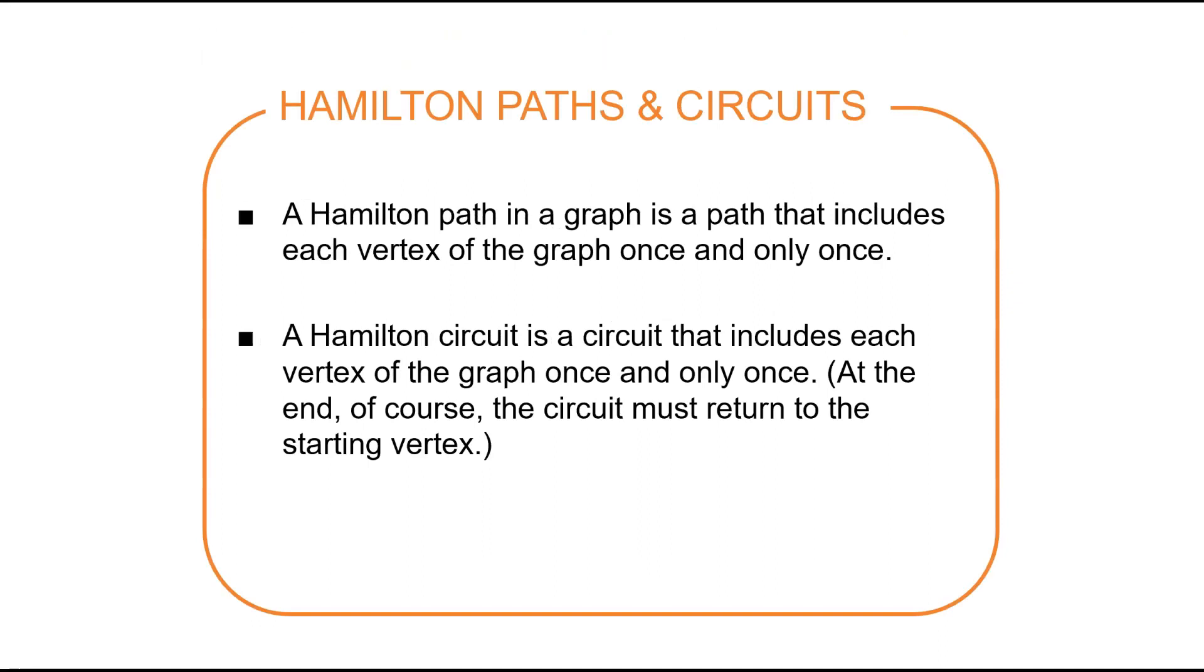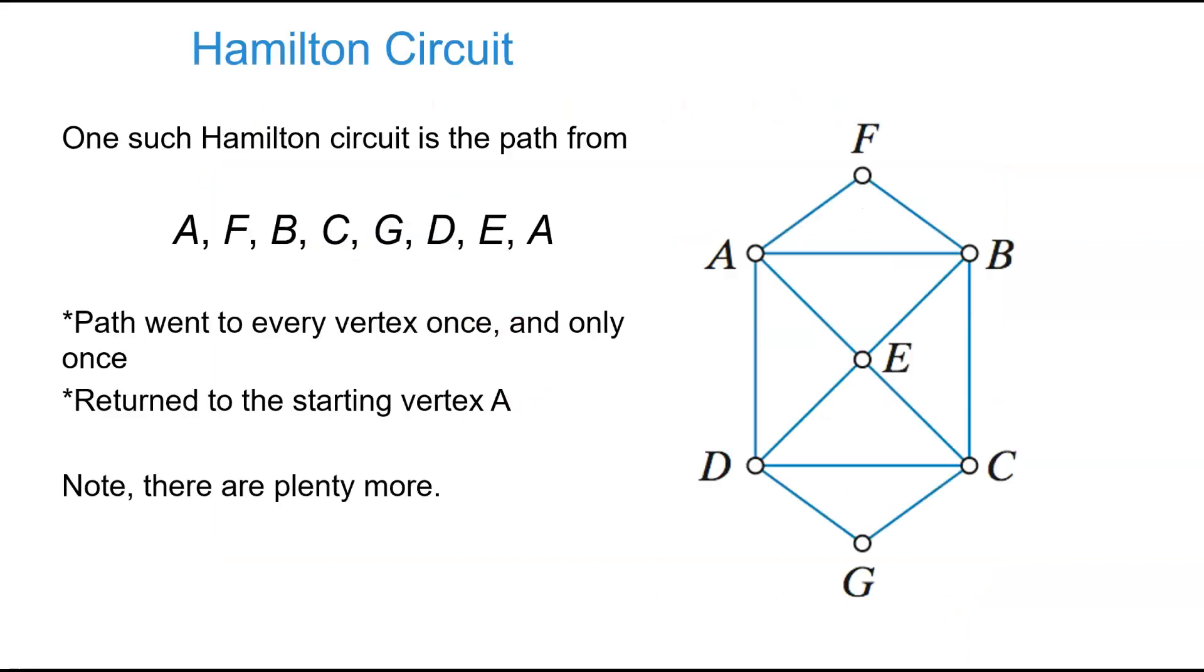Finding paths and circuits that include every vertex of the graph once and only once. These are Hamilton paths and circuits. So a Hamilton path, to be a Hamilton path, it needs to include each vertex of the graph once and only once. And the difference between a circuit and a path is that the circuit must return to the starting vertex. So one such Hamilton circuit is a path from A, F, B, C, G, D, E, A. So it went through every vertex once and only once, and it returned to the starting. Now there's more than one Hamilton circuit. We'll actually find out how to calculate how many, but that's an example of one circuit.